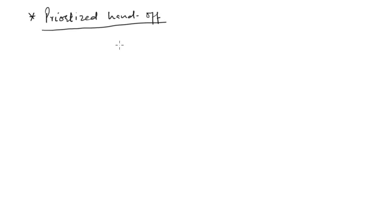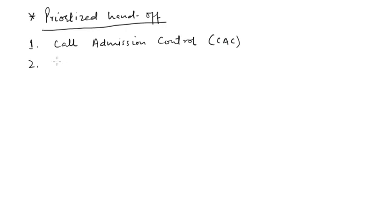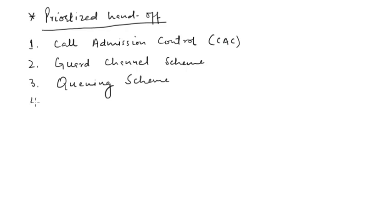Prioritized handoff, as the name suggests, prioritizes the handoff mechanism. For that we have different schemes: number one is the call admission control scheme, number two is the guard channel scheme, number three is the queuing scheme, and number four is the channel reservation scheme.